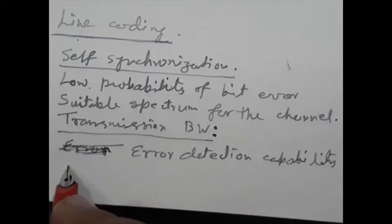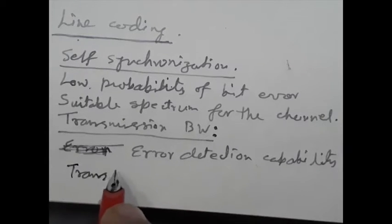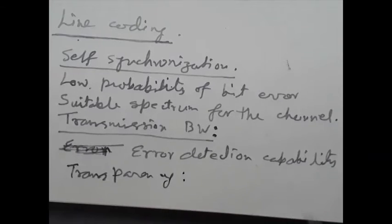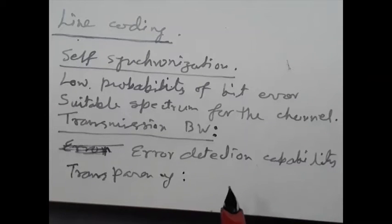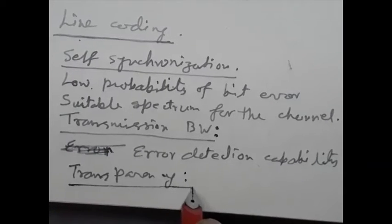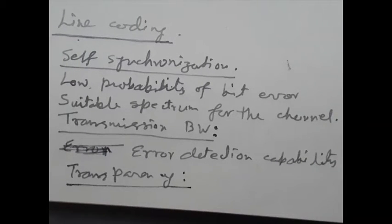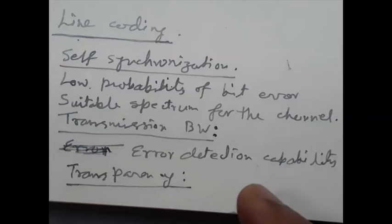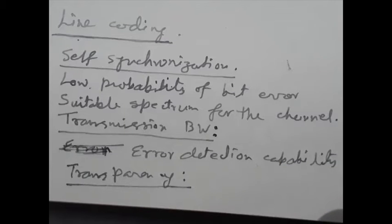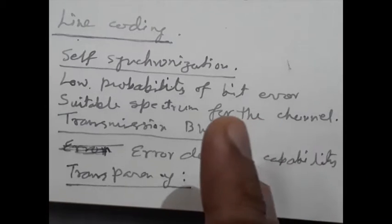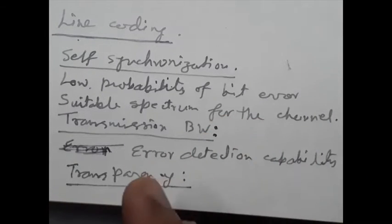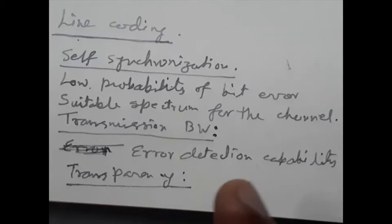And finally, transparency. The data protocol and the line code are designed so that every possible sequence of data is faithfully and transparently received and can be detected. Now, as mentioned, a large number of line coding schemes exist, but we are not going to discuss all of them. Instead, we divide all line coding into several categories and will discuss one line code from each category.